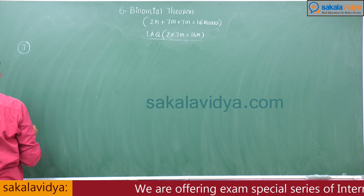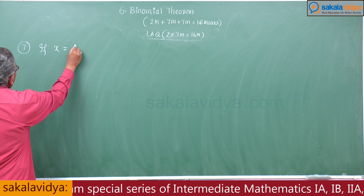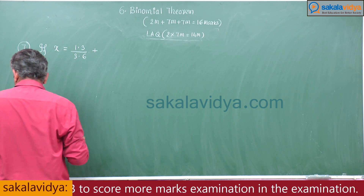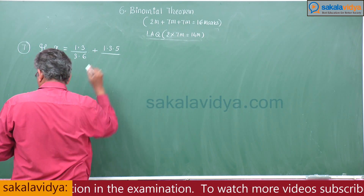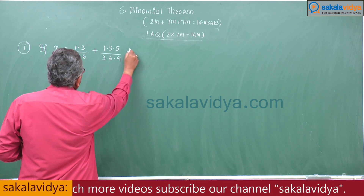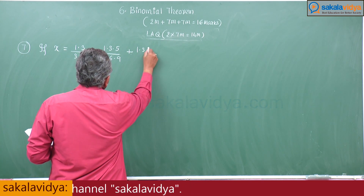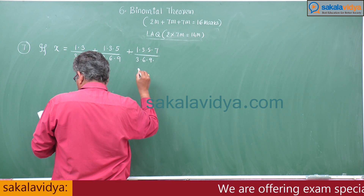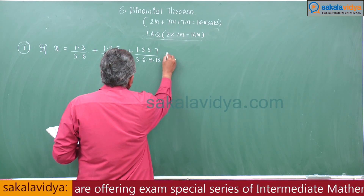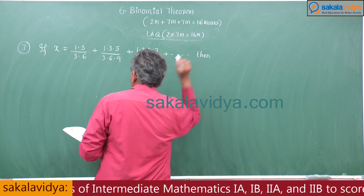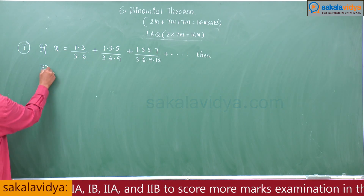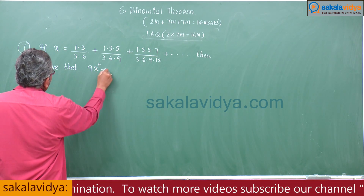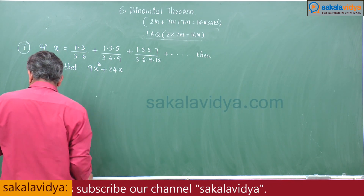Seventh problem: if x is equal to 1·3/(3·6) + 1·3·5·7/(3·6·9) + 1·3·5·7/(3·6·9·12) + … then prove that 9x² + 24x = 11.